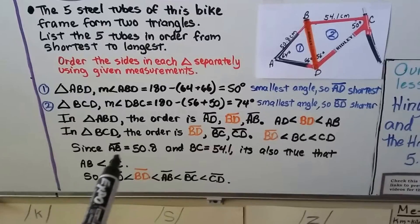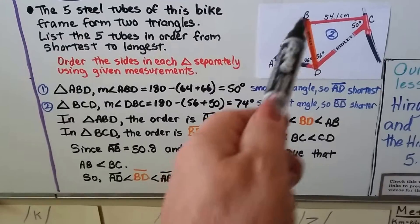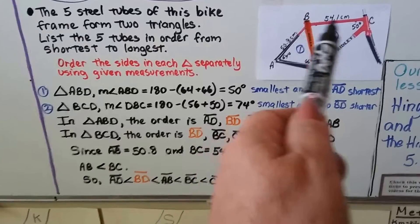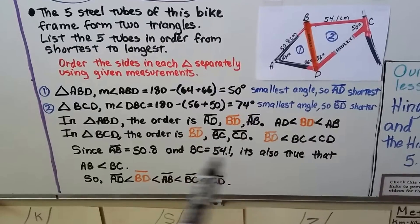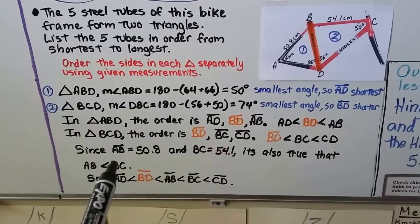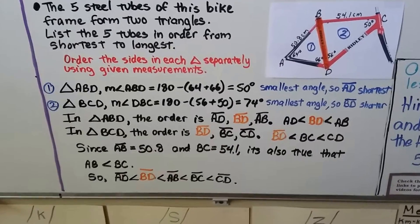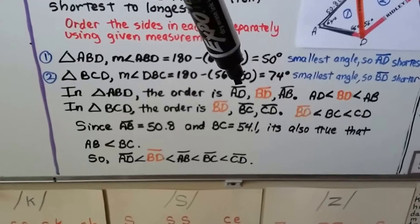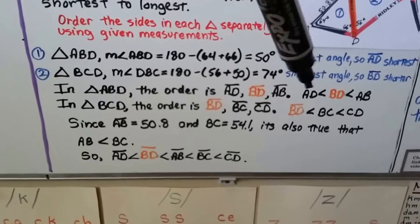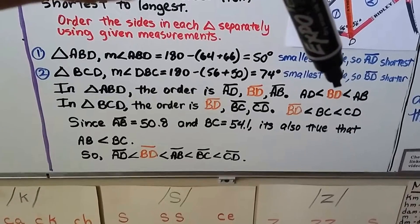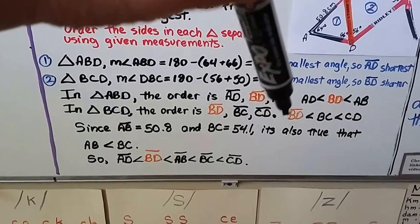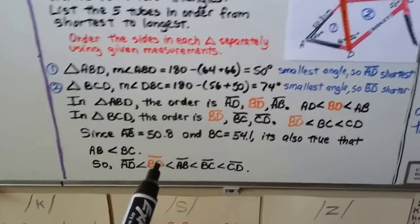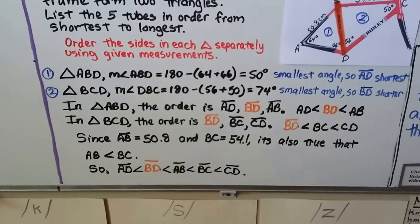Since segment AB is 50.8 centimeters and BC is 54.1 centimeters, it's also true that AB is less than BC. We can see that AD is first in line, and then BD. So we know that's smaller than BD, so that would come before it. So our order for both triangles would be AD, then BD, then AB, then BC, then CD.